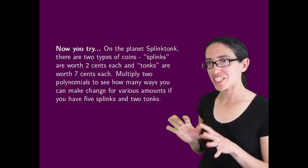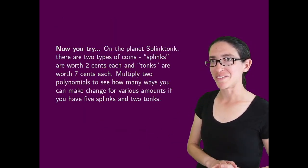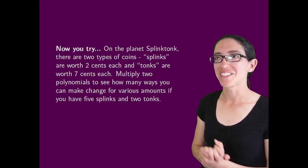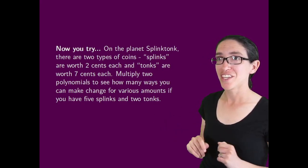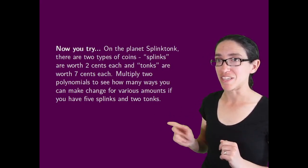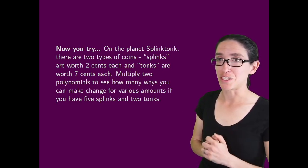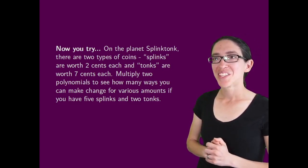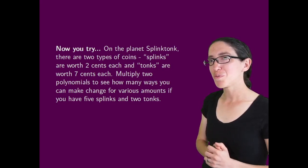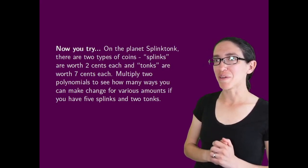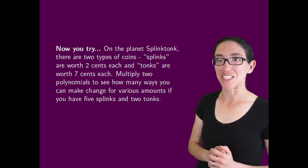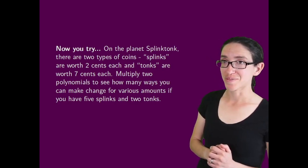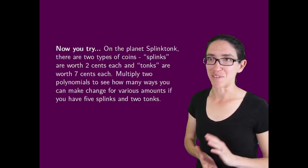So now you try. Let's change up the coins a little bit. On the planet Splinktonk, there are two types of coins: splinks, worth two cents each, and tonks, worth seven cents each. You can't give somebody just one cent on the planet Splinktonk. Multiply two polynomials together to see how many ways you can make change for various amounts if you have five splinks and two tonks. And that's all for today — I'll see you next time.